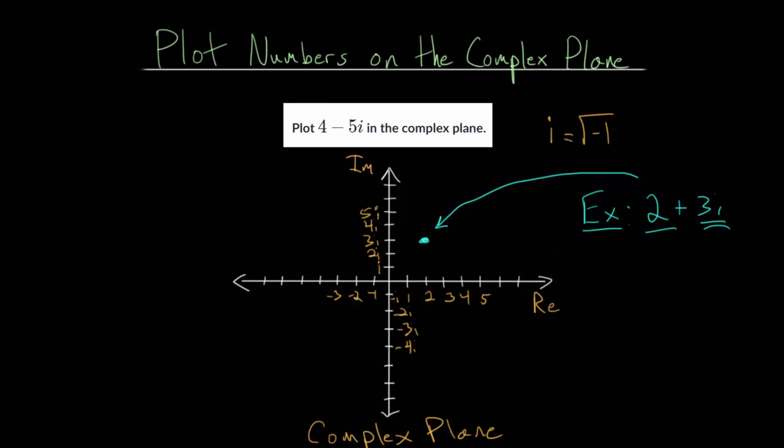Likewise, if we look at another example, let's say we have minus 3 minus 5i. We start with our real part. We're going to go left 3 units to minus 3. And then for the imaginary part,